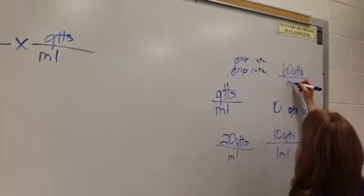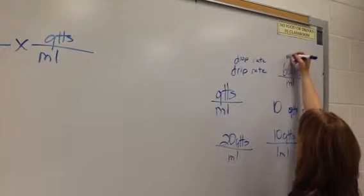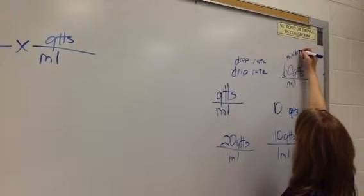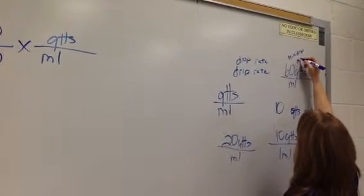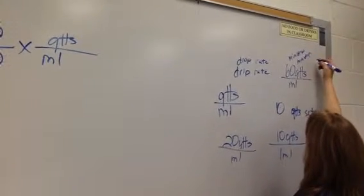Little, tiny, bitty drops. 60 drops per ml is going to be a mini drip. You'll see it written mini drip or mini drop or mini drop set.